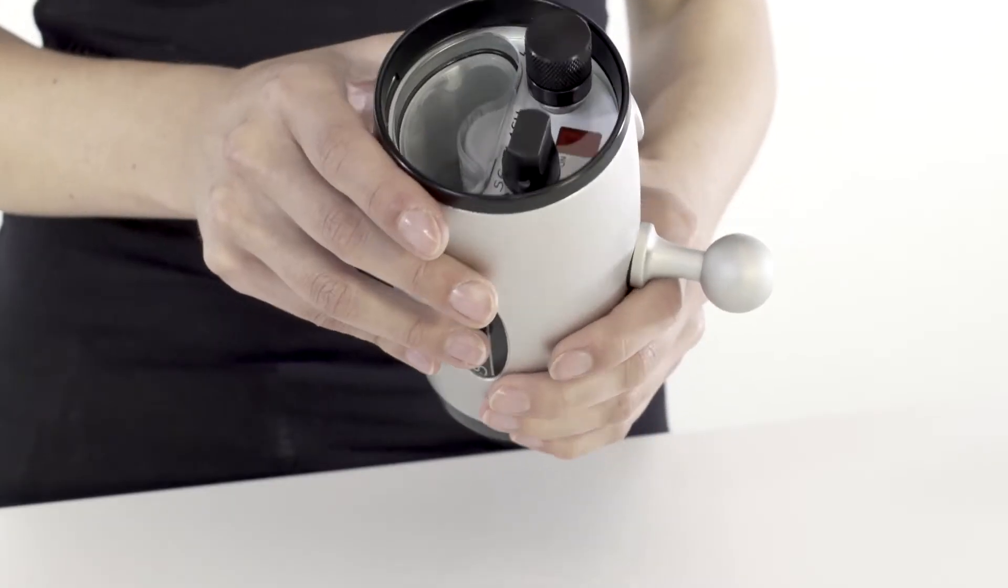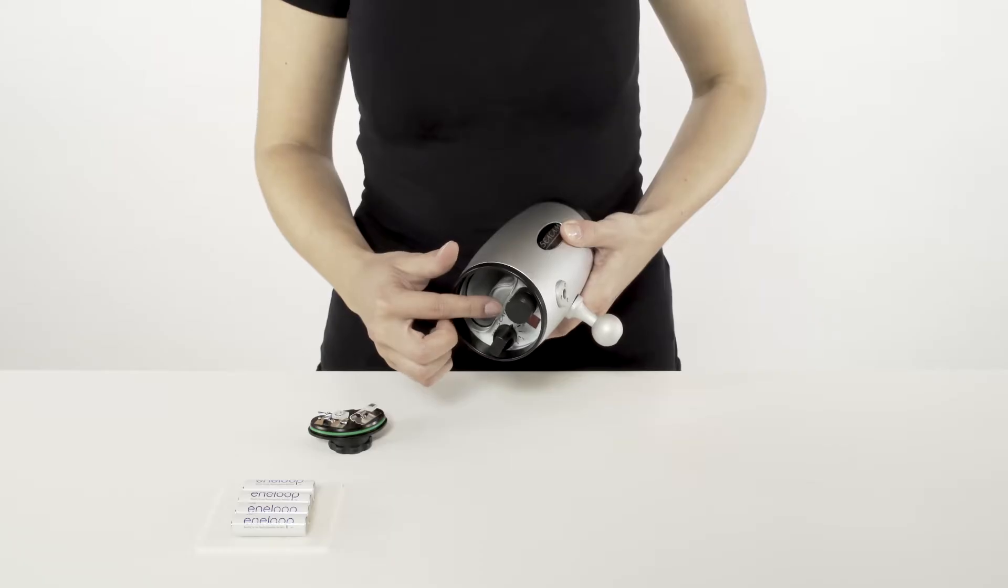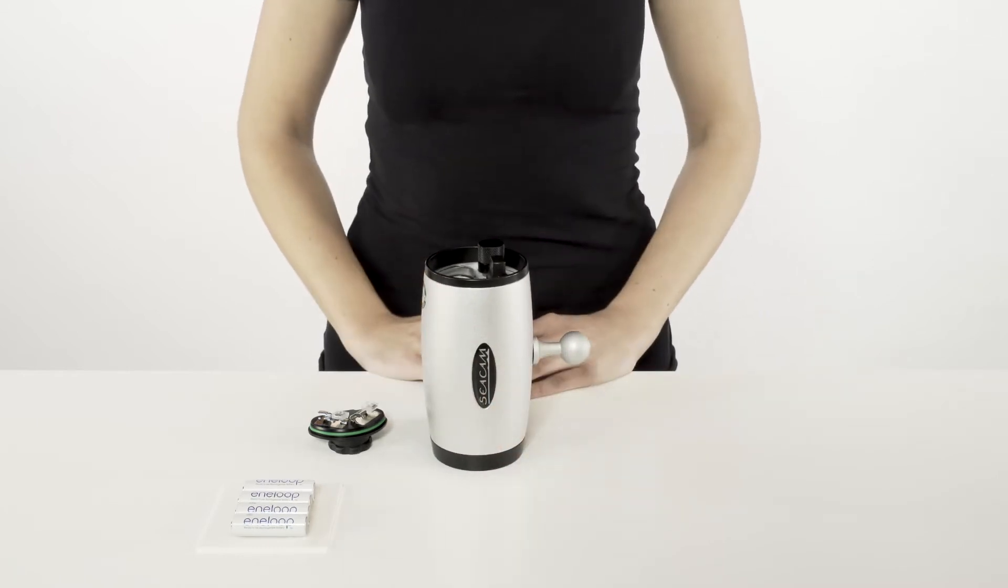The battery container provides space for four batteries. Insert them as instructed on the marking on the inside of the container and pay attention to correct polarity.